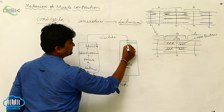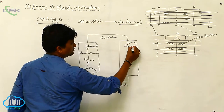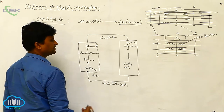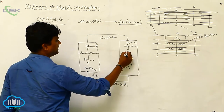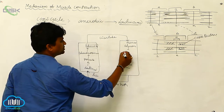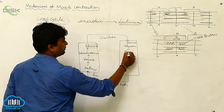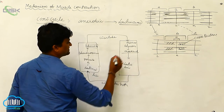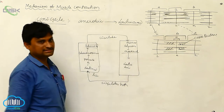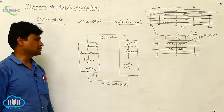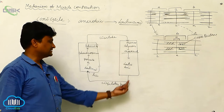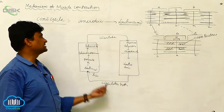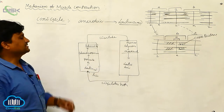The muscle receives this glucose and again the movement will start — muscle contraction will be started. These type of cyclical events, we consider as the Cori cycle. Cori is a scientist who explained this type of cycle — the transformation of glucose converted to lactic acid by the anaerobic respiration of the muscle.